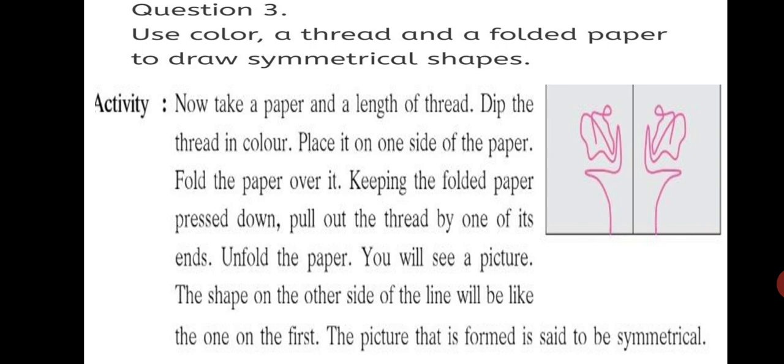Let's have a look at the answer. Take a paper and a length of thread. Dip the thread in color. Place it on one side of the paper. Fold the paper and open it, then place the thread only on one side of the paper. Now, fold the paper over it. Keeping the folded paper pressed down, pull out the thread by one of its ends. Now unfold the paper. You will see a picture. The shape on the other side of the line will be like the one on the first. The picture that is formed is said to be symmetrical.